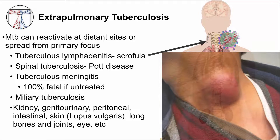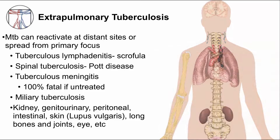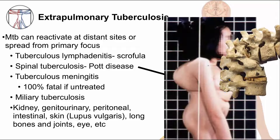TB disease can also affect the spinal vertebrae and causes a spondylitis with an eponym of Pott's disease. MTB destroys the disc and extends into adjacent vertebral bodies. The destruction results in a gibbus deformity, as you can see in this photo. The image of the vertebral bones shows the destruction of the vertebral body and the resultant collapse and deformity.